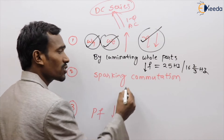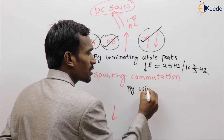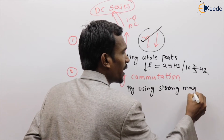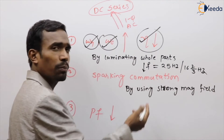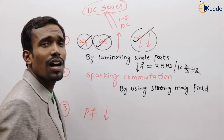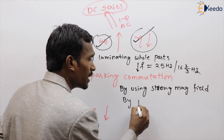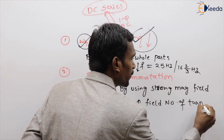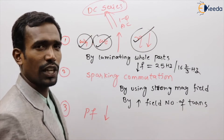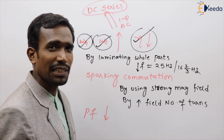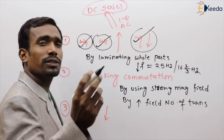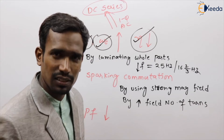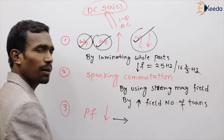The second remedy is for sparking commutation. By using a strong magnetic field — that is, by increasing the field number of turns — we can improve commutation.